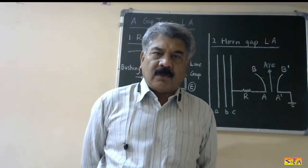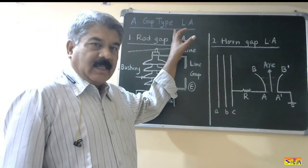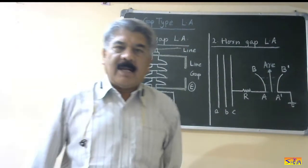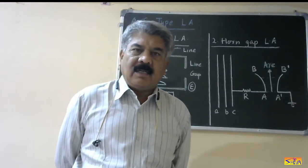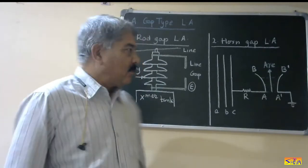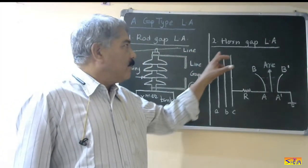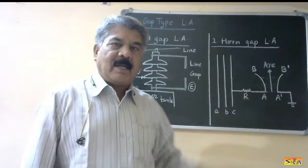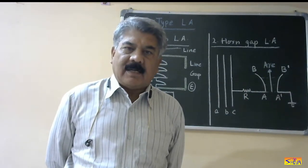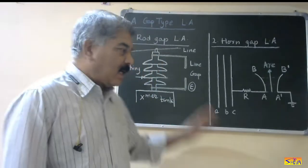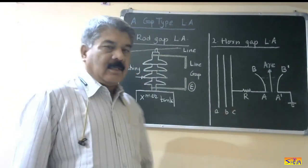Today I will start discussion on the first category, that is gap type lightning arrestors. In this category I will explain three different types: number one, rod gap lightning arrester; number two, horn gap lightning arrester; and number three, expulsion type lightning arrester. Let us start with the first one, that is rod gap lightning arrester.